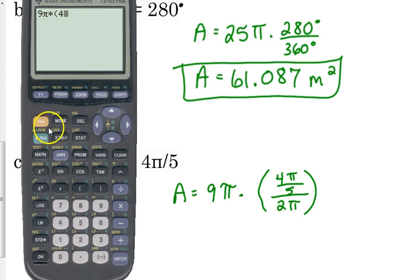We've got to put the 4 pi over 5 in parentheses, and its own set of parentheses divided by 2 pi needs its own set of parentheses because we're dividing by 2 times pi. So if you don't put parentheses around it, it's going to mess up the order of operations.